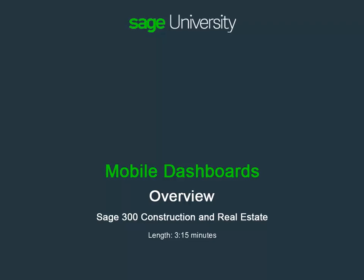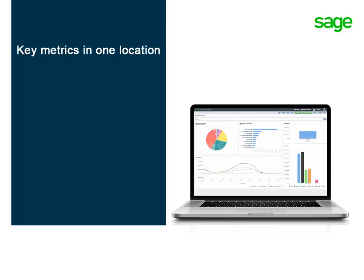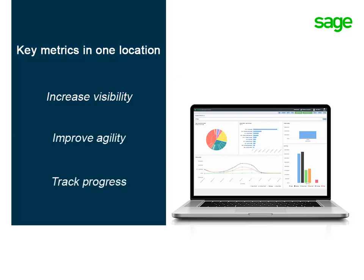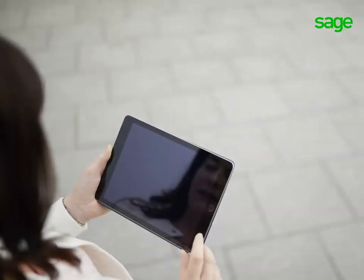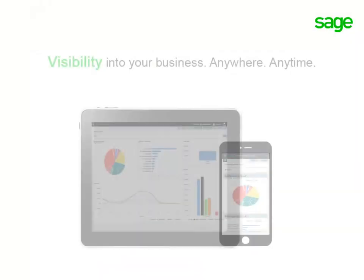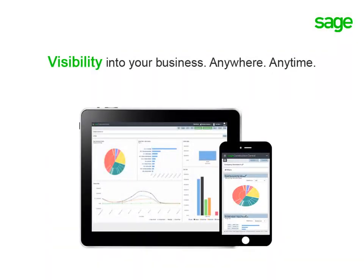Mobile intelligence continues in Sage Construction Central with dashboards — key metrics for your organization in one location. Data is simplified into visual information so you're able to see overall performance at a glance and quickly respond to issues and opportunities. Now you can know what's going on in your business at all times, no matter where you are.